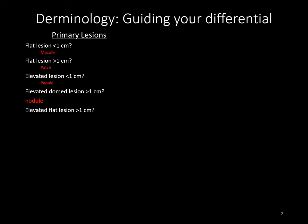An elevated flat lesion that's greater than one centimeter but is flat is not called a nodule but is instead called a plaque — that's the counterpart to a patch, because a patch is a flat lesion greater than one centimeter diameter whereas a plaque is an elevated flat lesion greater than one centimeter. The difference in elevation can also determine what your primary lesion is. The way to tell if a lesion is elevated is if you close your eyes and run your hand over it — if you feel an elevation, it could be a papule, nodule, or plaque.